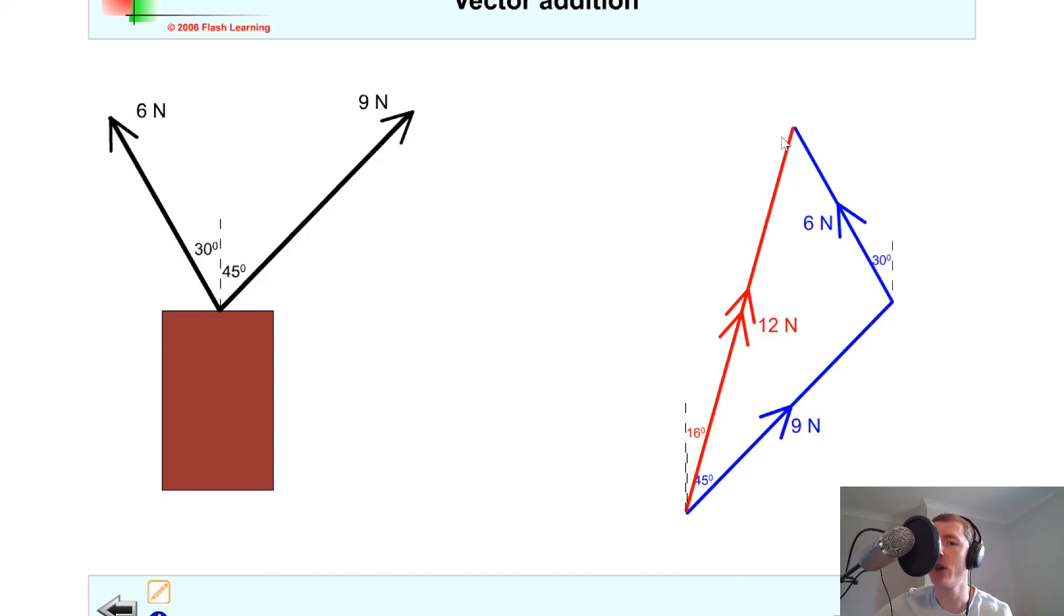So this would give a value of 12 newtons here. And then we'd be able to work out this angle here to help us get our direction because we know that this little angle in here is 16 degrees.